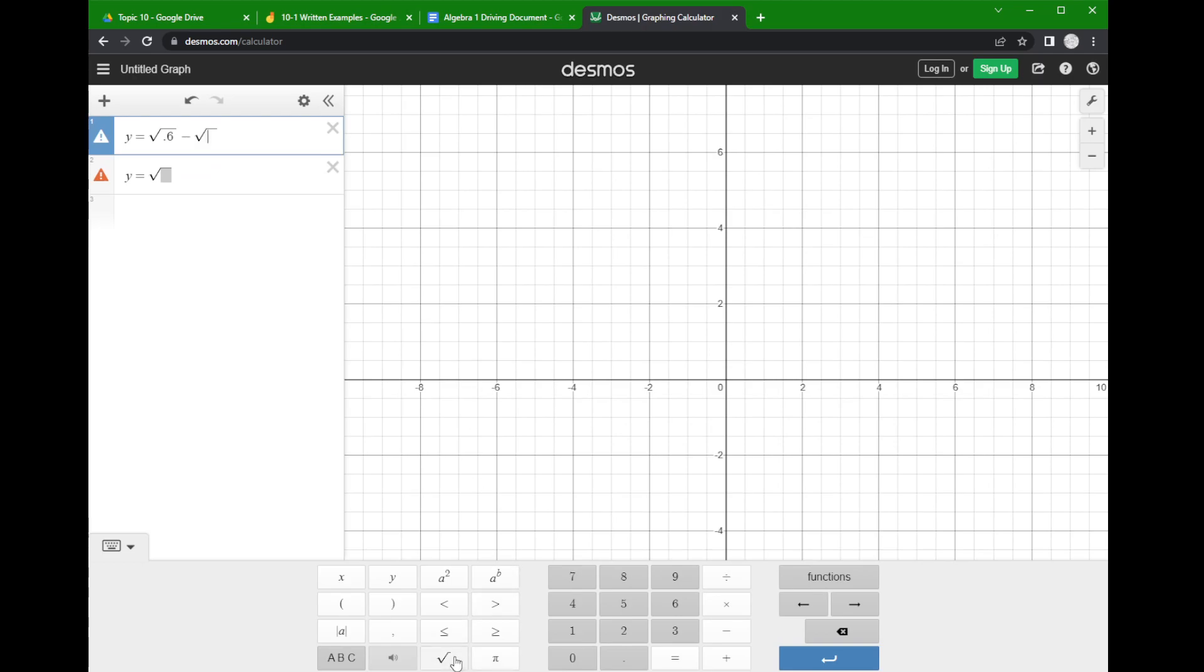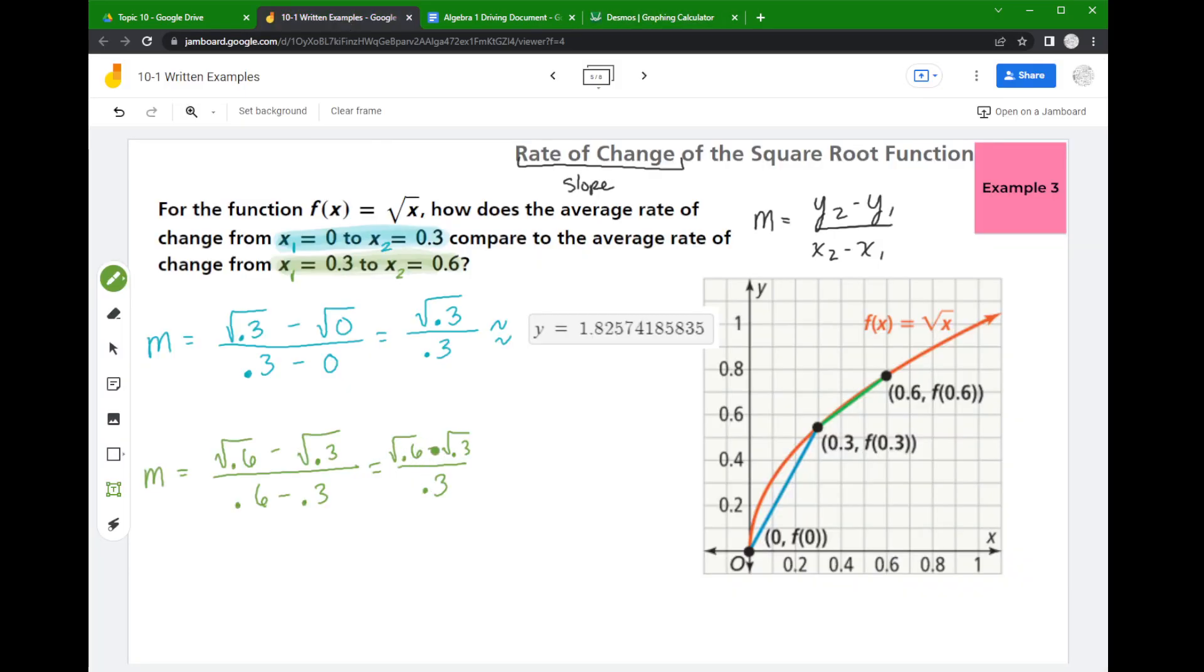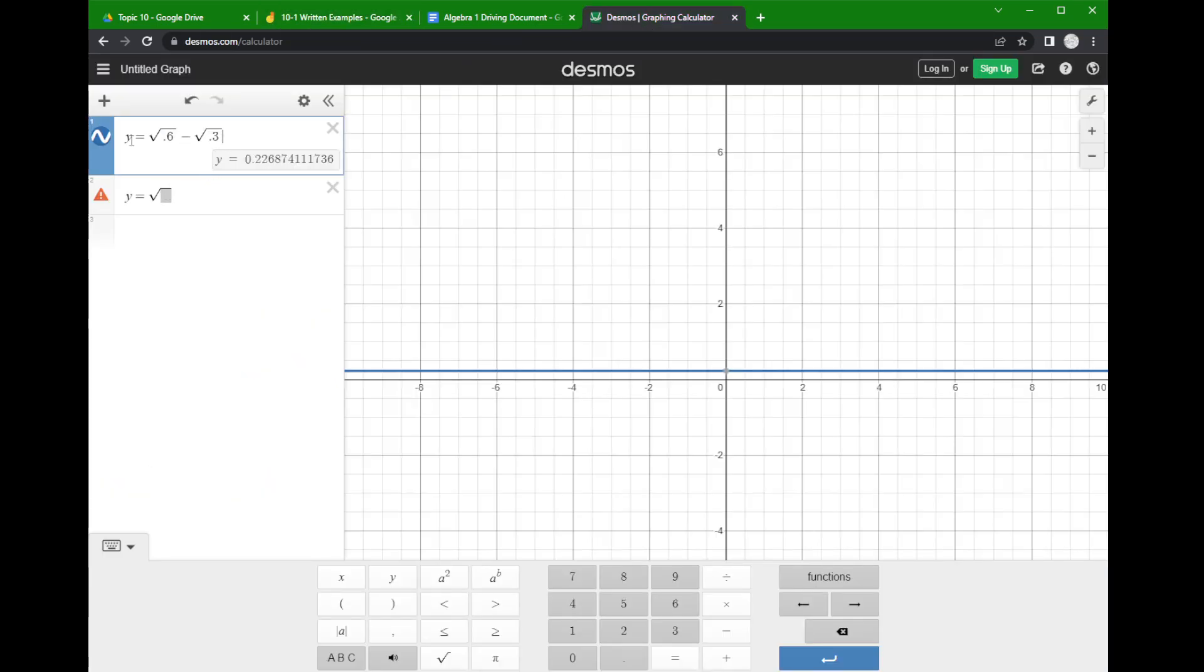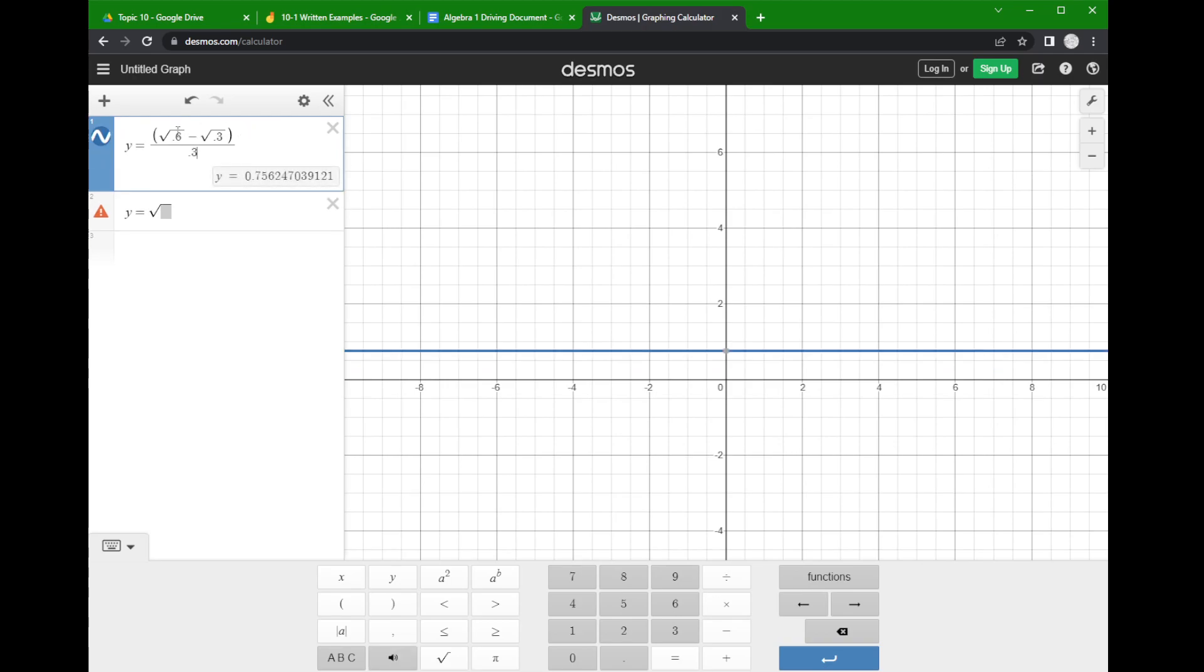So if I go to Desmos, I have the square root of 0.6 minus the square root of 0.3. Now notice if I move out of the radical house and I put a division, do you see how it just divides the 0.3? I don't want that, because the 0.6 and the 0.3 up top are both being divided by the 0.3 down below. So to get around that, we use grouping symbols to help ensure that I'm dividing what needs to be divided.